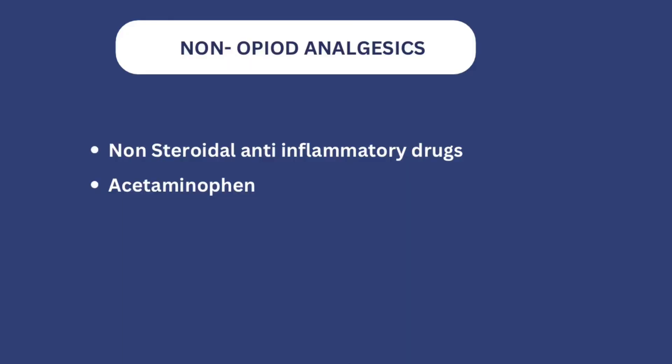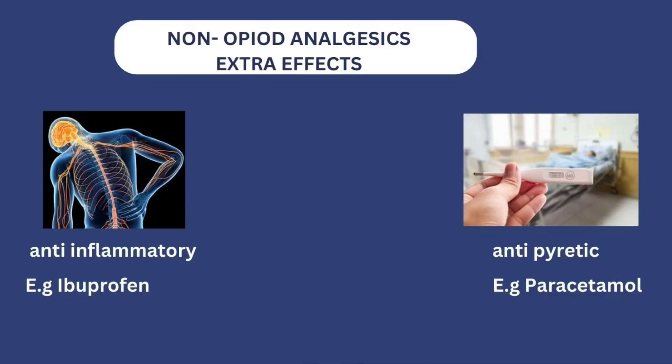The second class of medications are the pain medications that are not opioids — that's why they are called non-opioids — which means that they don't have the tendency for sedation, slowing down the heart, or causing CNS depression. There are two major classes under this: you have NSAIDs, which are non-steroidal anti-inflammatory drugs, and also your acetaminophen, which is your paracetamol.